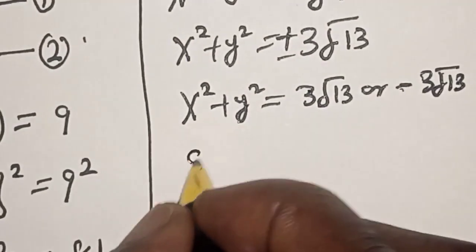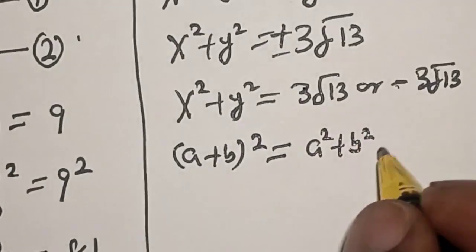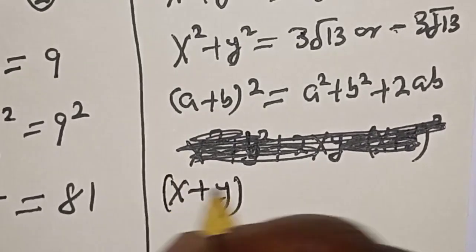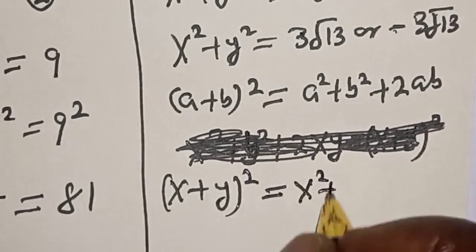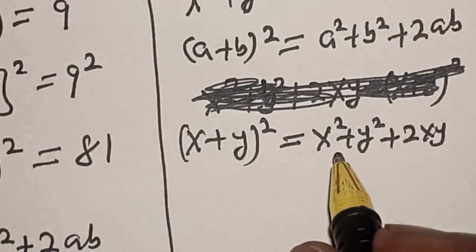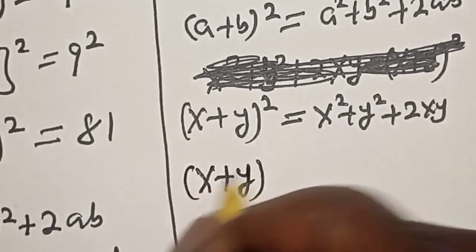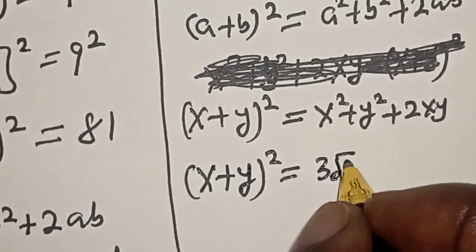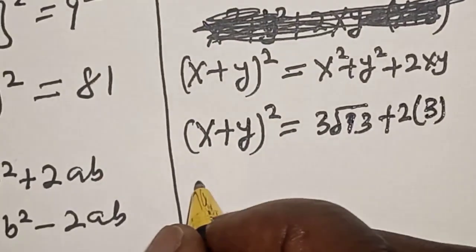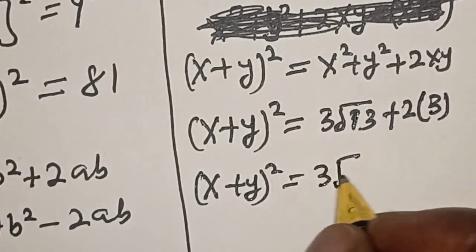Now remember that x plus y squared is equal to x squared plus y squared plus 2xy. We already know that x squared plus y squared is equal to 3 root 13 and xy equals 3. Therefore x plus y squared is equal to 3 root 13 plus 2 times 3, which gives x plus y squared is equal to 3 root 13 plus 6.